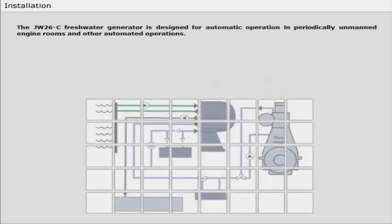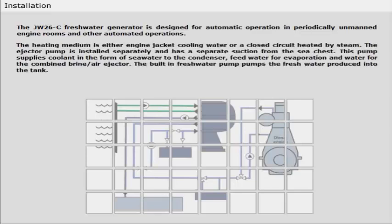The JW26C freshwater generator is designed for automatic operation in periodically unmanned engine rooms and other automated operations. The heating medium is either engine jacket cooling water or a closed circuit heated by steam. The ejector pump is installed separately and has a separate suction from the sea chest. This pump supplies coolant in the form of sea water to the condenser, feed water for evaporation, and water for the combined brine air ejector.